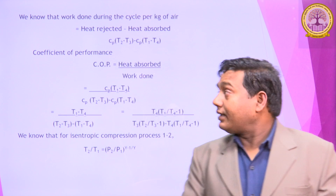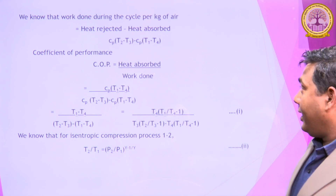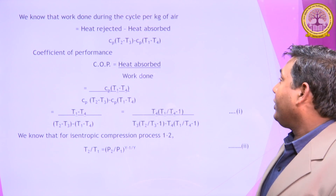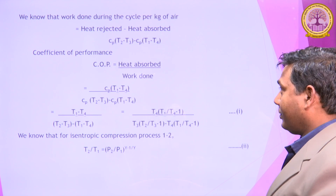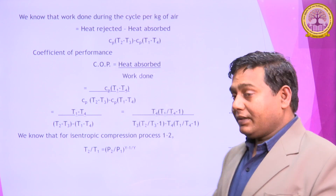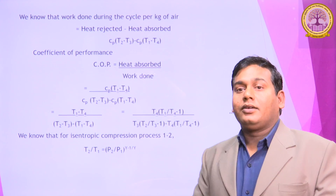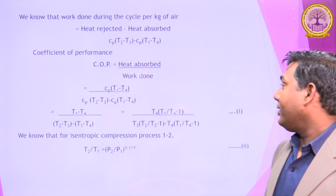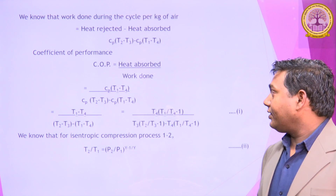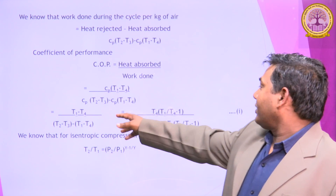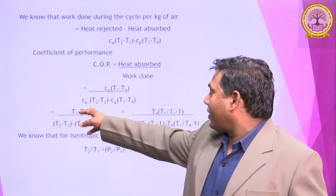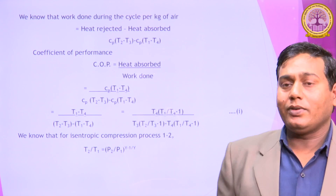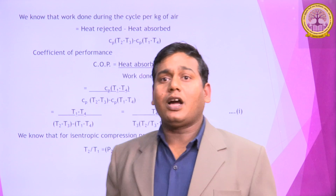We know that the work done by the cycle equals heat rejected minus heat absorbed. The work done is equal to Cp(T2 minus T3) minus Cp(T1 minus T4). The Coefficient of Performance of the Bell-Coleman Cycle is heat absorbed divided by work done, which is Cp(T1 minus T4) over [Cp(T2 minus T3) minus Cp(T1 minus T4)]. We take common factors from T4 and T3.